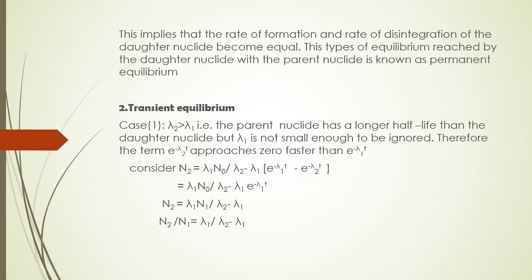This implies the rate of formation and the rate of disintegration of the daughter nuclei become equal. This type of equilibrium reached by the daughter nuclei with the parent nuclei is called permanent equilibrium. Another name for permanent equilibrium is secular equilibrium.